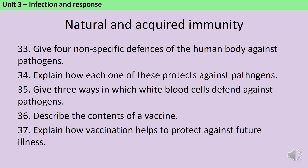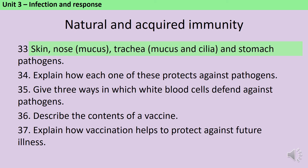Your body is protected against pathogens by your skin, your nose, your trachea and your stomach. The skin acts as a barrier and prevents pathogens from getting in. The nose and the trachea both contain mucus, and that sticky mucus traps pathogens. Then cilia, tiny hair-like projections, waft the mucusy pathogen-containing material so that eventually you swallow it and it goes into your stomach, which is full of hydrochloric acid that kills a lot of pathogens by denaturing the proteins in their coats.